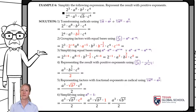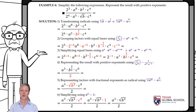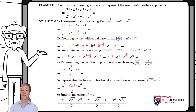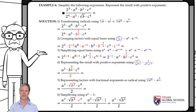We simplify factors with equal bases by adding or subtracting exponents, reducing each number or variable to a single base. We then represent the result with positive exponents by lowering factors with negative exponents — the only factor moved to the denominator is 2 raised to negative 1. Finally, we transform factors with fractional exponents: b to the 3 halves becomes the square root of b cubed, and c raised to 0 equals 1 by definition. The simplified result is the square root of i cubed times the square root of b cubed, all over 2.